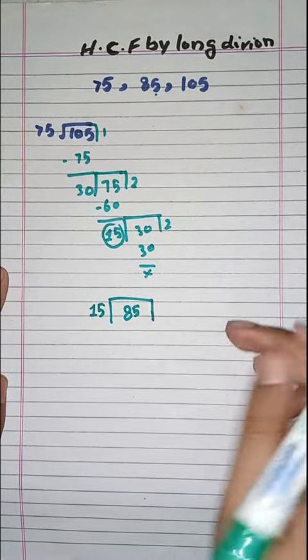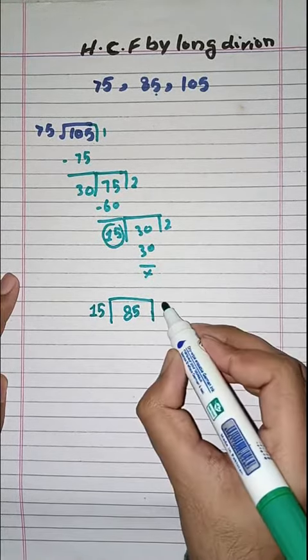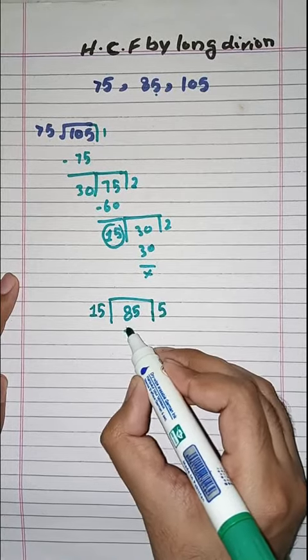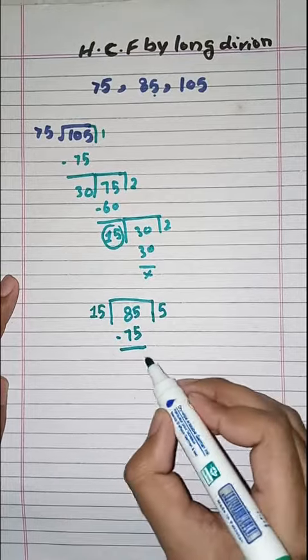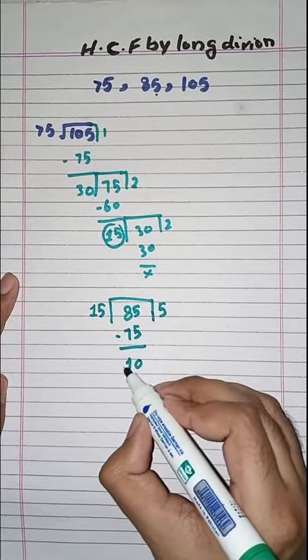Now we will divide these two. 15 fives are 75. Minus, what would be 0? 8 minus 7 is 1.